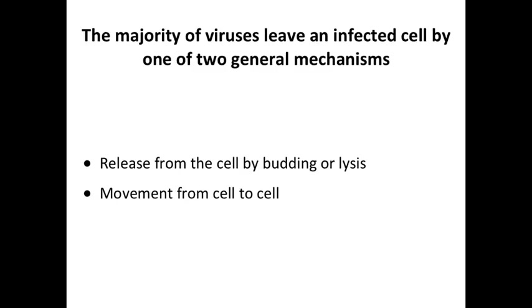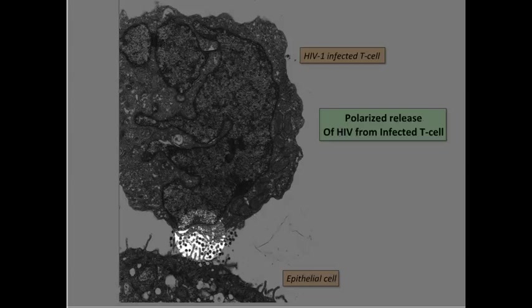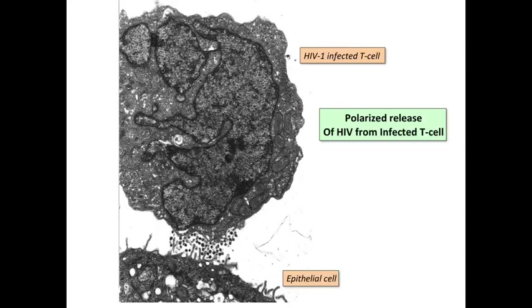At the end here I want to talk about how viruses get out of cells. We talked about budding, which is one way. Many viruses lyse the cell — they break them open and come spilling out. Other viruses don't break cells open; they can move from cell to cell or exit without cell lysis. Here's an example of an HIV-infected T cell releasing virions by budding.